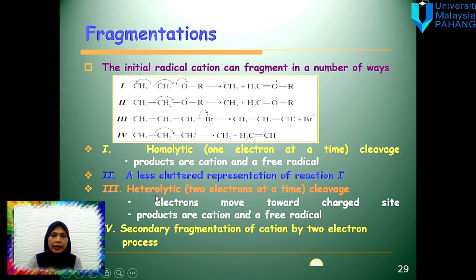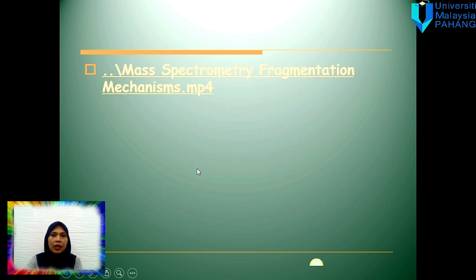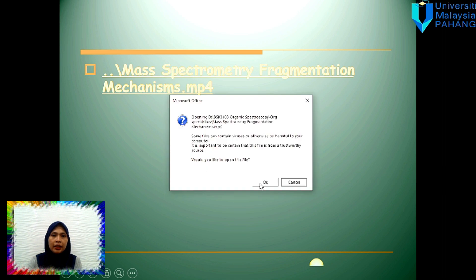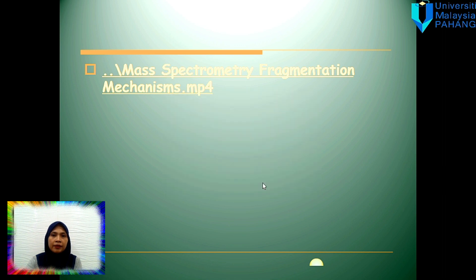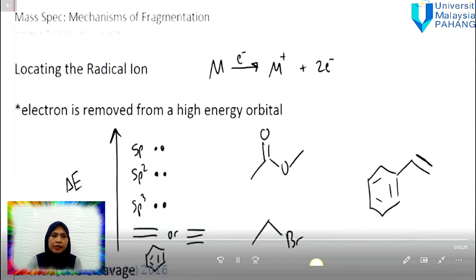The next example is heterolytic, the other common mechanism used in fragmentation. Heterolytic is the transfer of two electrons at a time, so both electrons are transferred, this bond is broken, and one part is left as a cation while this part becomes a radical. See this video for further details about the mechanism.